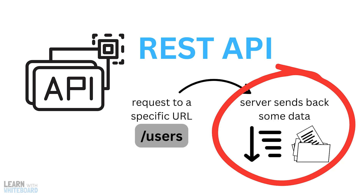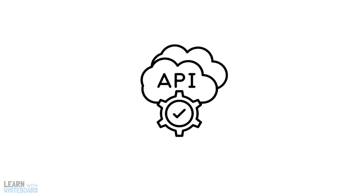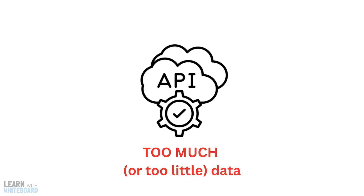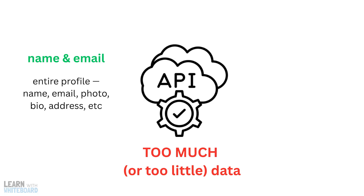While REST APIs are great, they often bring too much or too little data. For example, if you need only a user's name and email, the API might still send you the entire profile with name, email, photo, bio, address, etc. This is called overfetching.